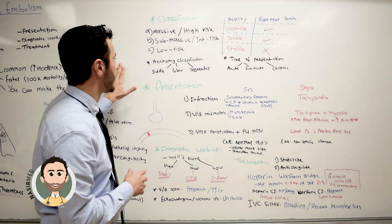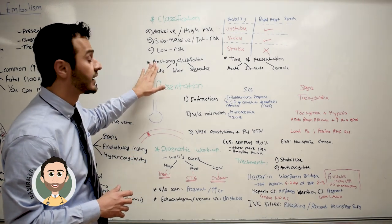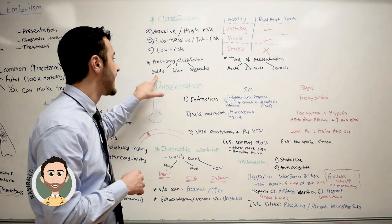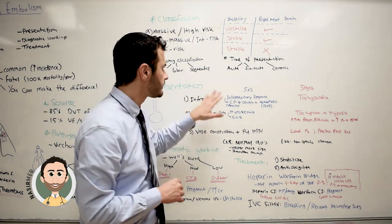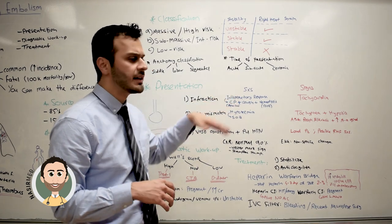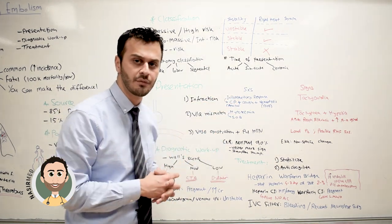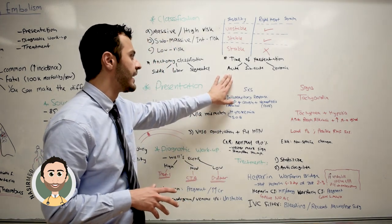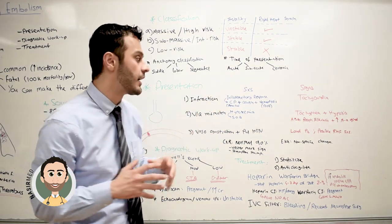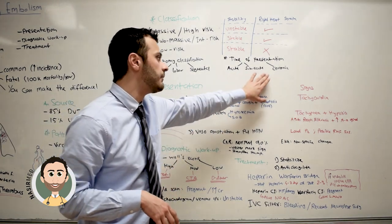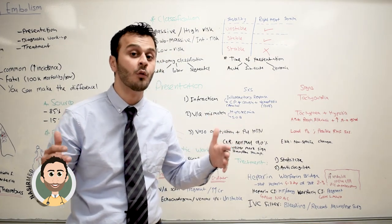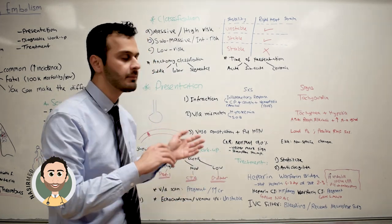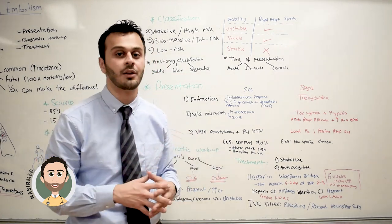If there is no right heart strain and the patient is hemodynamically stable, we classify it as low risk. There are other ways to classify PE — based on the anatomy of where the clot is located: saddle, lobar, or segmental. You can also classify it by time of symptom onset: acute (within minutes to hours), chronic (symptoms developing gradually over years), or subacute (weeks to months).